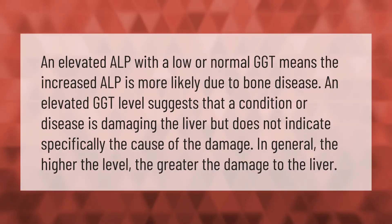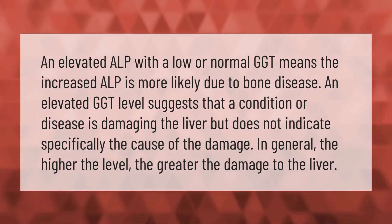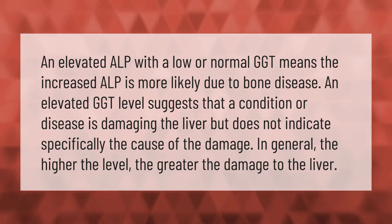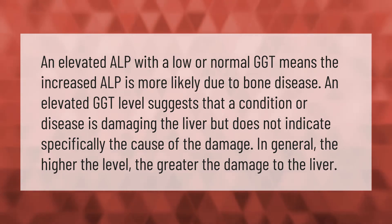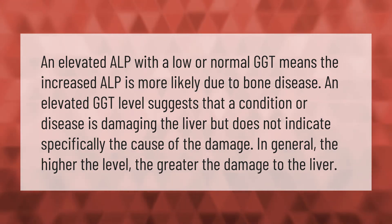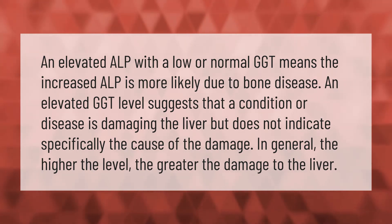An elevated ALP with a low or normal GGT means the increased ALP is more likely due to bone disease. An elevated GGT level suggests that a condition or disease is damaging the liver, but does not indicate specifically the cause of the damage. In general, the higher the level, the greater the damage to the liver.